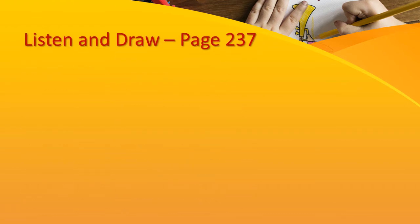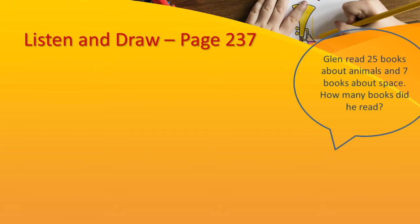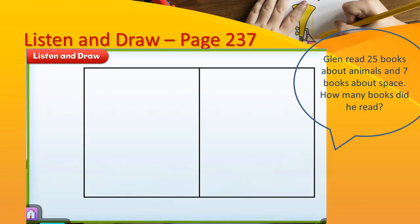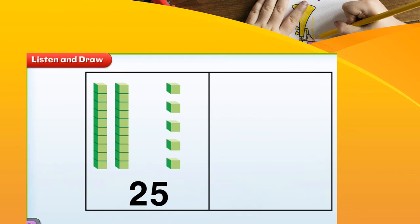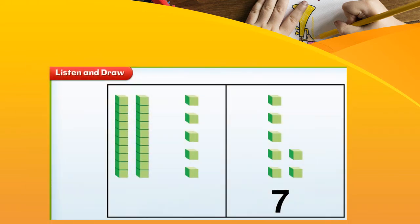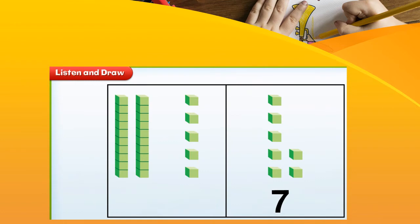Let's begin with listen and draw, which is on page 237. Glenn read 25 books about animals and 7 books about space. How many books did he read? Let's make a model to see how many books he read. Let's use 10 blocks and 1s blocks. A model for 25 is 2 tens and 5 ones. A model for 7 is 7 ones.